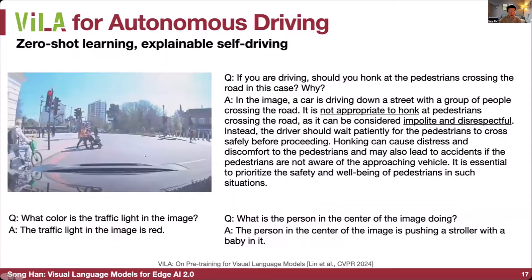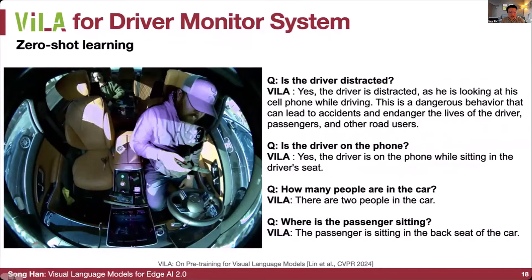VILA is very useful for real-world applications like autonomous driving. We can enable explainable self-driving and deploy it on a Jetson Orin. If you're driving, should you honk at pedestrians? It can say it's not appropriate to honk — it's impolite and disrespectful. There's a lot of common sense and world knowledge included. For the driver monitoring system, we can ask if the driver is distracted, is the driver on the phone, how many people are in the car, and where the passenger is sitting — all with just a single model.